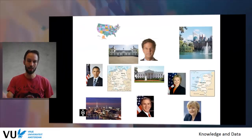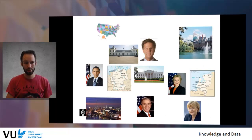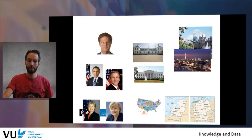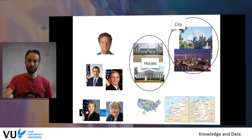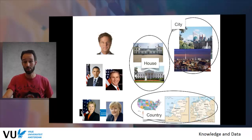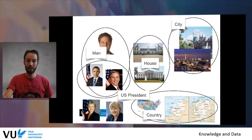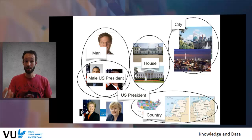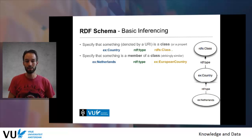You have all these instances — these data points basically. You have countries and people and pictures of cities. They all have some name, some year in which they were founded, or a birth year. This is all data. What we want to do is group them together as classes and classify them: a city, a house, a country, a man, a US president, a male US president. Things can belong to multiple instances, and this is something we can do with RDF schema in part.